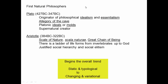During the Greek Empire we have the first natural philosophers. Plato lived about 2,400 to 2,300 years ago and invented philosophical ideas of idealism and essentialism — the concept that there are ideals or essential properties to things. He came up with the allegory of the cave and the idea of platonic ideals, or molds: things that were created, always the same, made by a supernatural creator, and that we try to figure out by looking at nature.